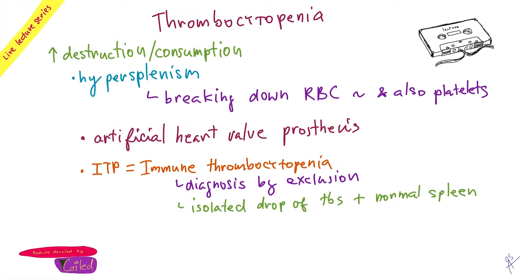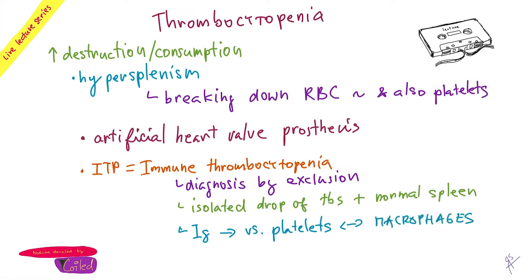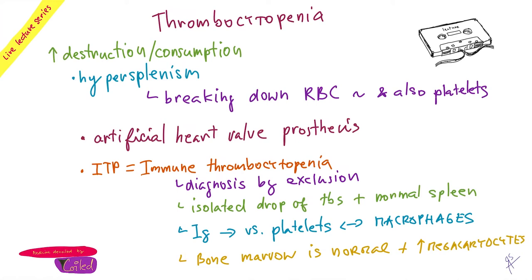The idea is: you form some autoantibodies against the platelets. When the platelets are covered with immunoglobulins, they are destroyed by macrophages. What is important here is the bone marrow is normal — this happens only in the bloodstream. If you do a bone marrow puncture, it's normal. There could even be increased megakaryocytes, because you're destroying your platelets and the bone marrow tries to react. So there could be more megakaryocytes.